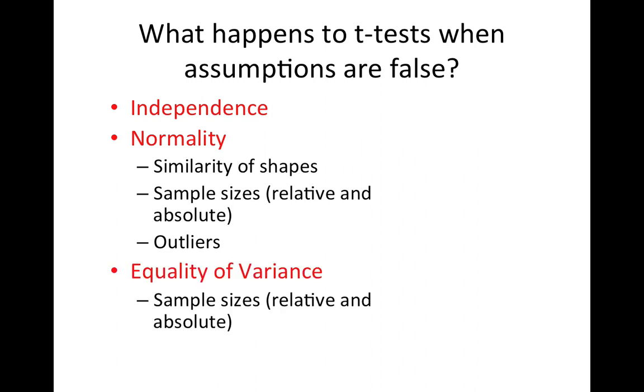And then there's also equality of variance. If you're going to do a t-test with pooled variance, there's this additional assumption that the variances are equal in the two populations. It turns out that has to do with sample size.